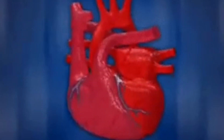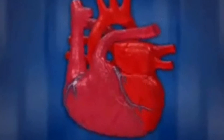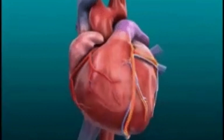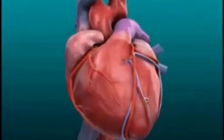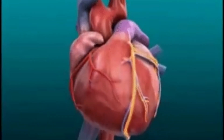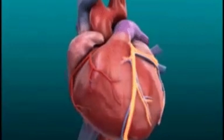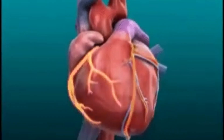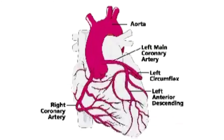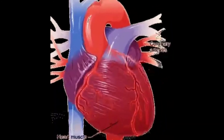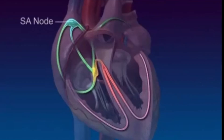Now let's discuss coronary circulation. Although the heart is always filled with blood, it does not take its oxygen and nutrient supply from the blood present inside its chambers. In order to supply oxygen and nutrients to the heart muscles, a coronary system is present. The right and left coronary arteries arise from the ascending aorta and supply oxygenated blood to the heart muscles. The coronary vein brings deoxygenated blood to the coronary sinus, which is then carried to the right atrium.